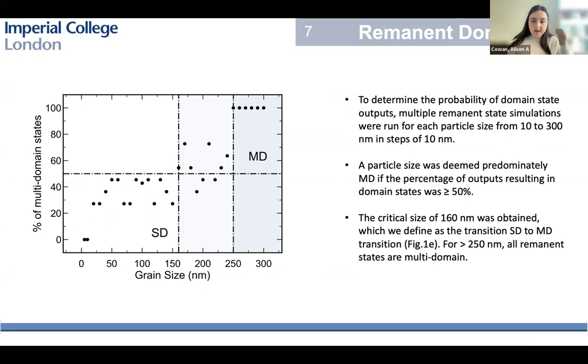So we've tried to quantify this, the remnant state results just to get the transition. We've done this pretty simply, we've just ran a number of remnant state simulations for each grain size, in this case 10 from 300 in steps of 10 nanometers. We have assumed that the particle is multi-domain, mainly multi-domain, if over 50% of these outputs are multi-domain solutions. So what we've done is we've defined a rough estimate of the single domain to multi-domain transition, and this is from 160 nanometers. And then at 250 nanometers, all remnant states are multi-domain. So we've got a better idea of what the single domain to multi-domain transition is from a randomized starting state.